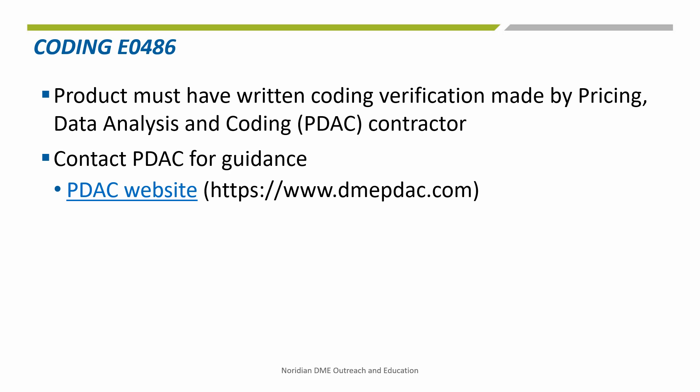In terms of coding, the only products that can be billed using code E0486 are those where a written coding verification has been made by the PDAC contractor. A coding verification request can be found on the PDAC website or by contacting the PDAC. There is also a product classification list with products which have received a coding verification on the PDAC website.